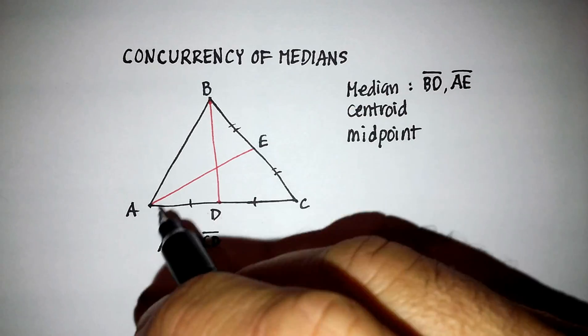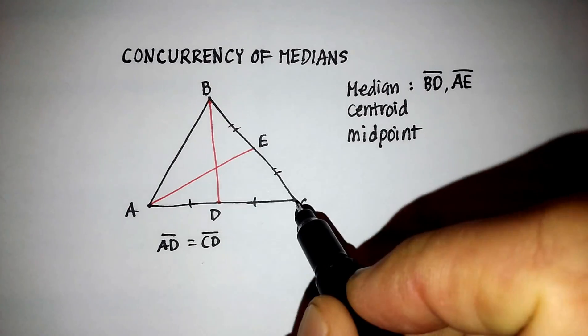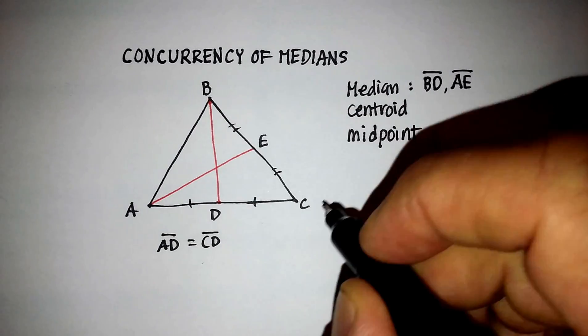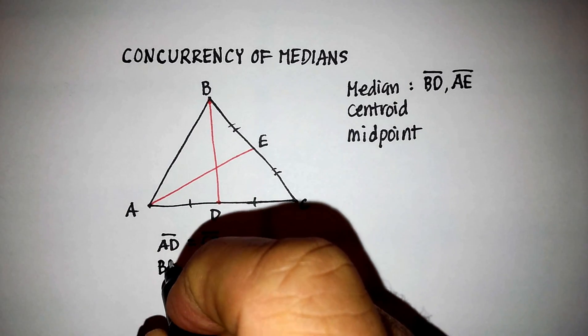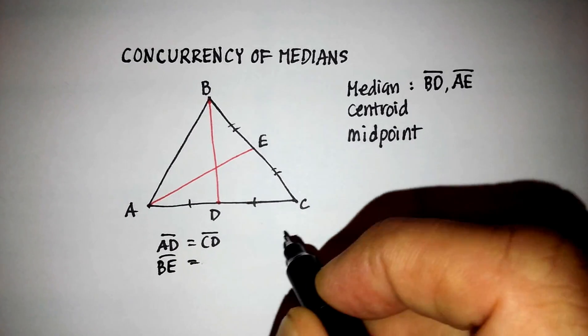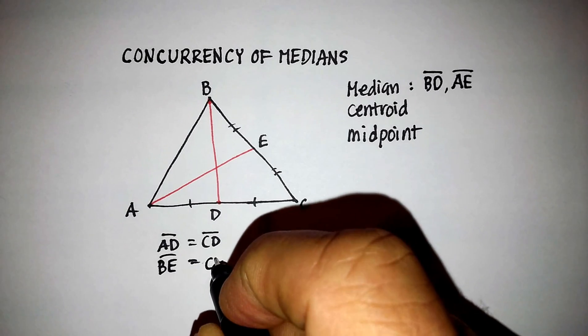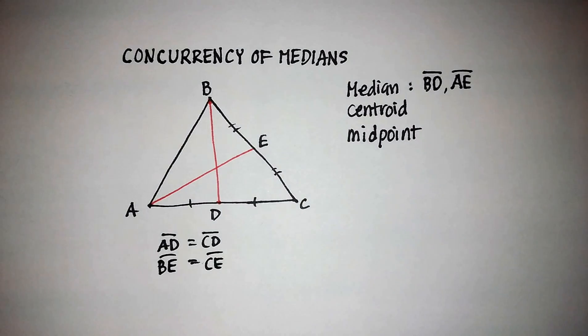And actually, let's just do this over here. So AD, we said it was equal to CD. Okay, line segments. Then I guess I'll put this down here. So line segment BE is equal to line segment CE.